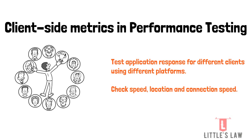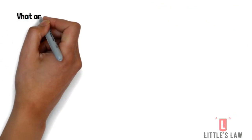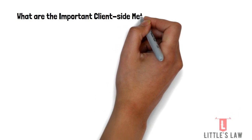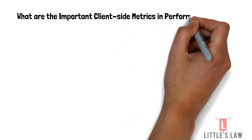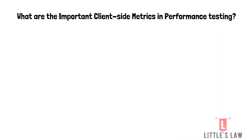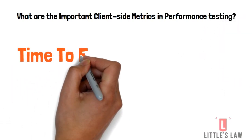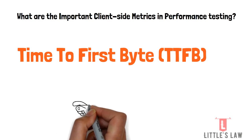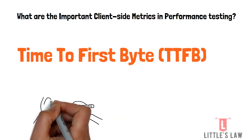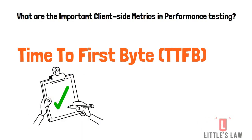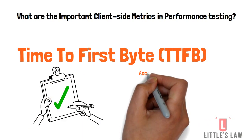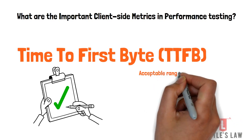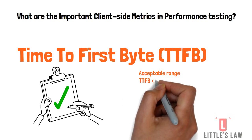As a recap, in server-side performance testing we collect response time, throughput, CPU utilization, memory utilization, number of hits, and success/failure of pages. When we come to client-side performance testing, we have: Time to First Byte, CPU Idle Time, Payload, Time to Interact, Speed Index, Load Time, and Time to Render.